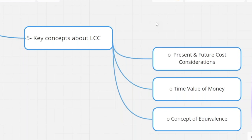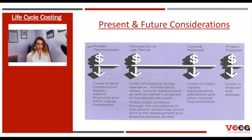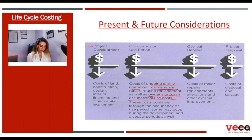The first key concept is present and future consideration. For a project, we have several types of costs: project development, occupancy or use period costs, cyclical and renewal costs, and project disposal costs. Regarding project development, we have the cost of land, construction, design, interim financing, and other capital investment. Regarding the occupancy and use period, it presents costs of ongoing facility operation, maintenance, repair, routine replacement, as well as owner's program or functional use costs. This cost continues through the occupancy period and some may occur during the development and disposal period as well.